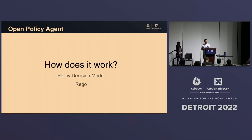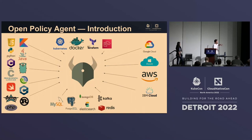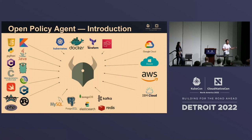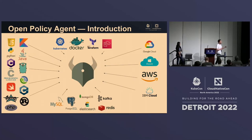So how does it work? The policy decision model. Essentially, as I stated, this is going to be a universal policy tool and framework. It's going to take all of the different languages you want to write in, all the different infrastructure tools, the different clouds you want to use, and allow you to have a centralized policy tool to work with all of them.